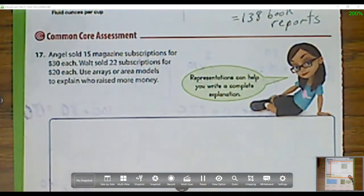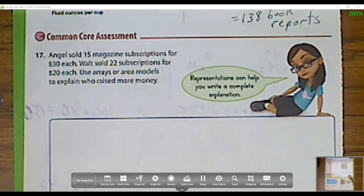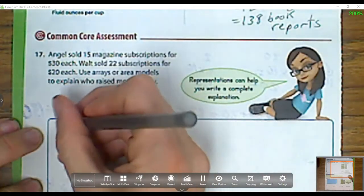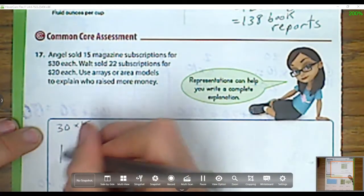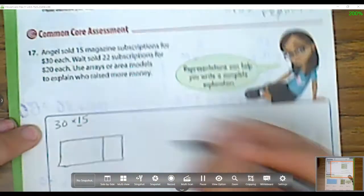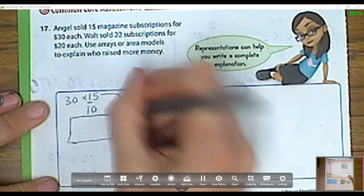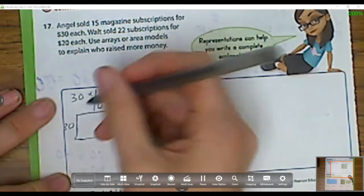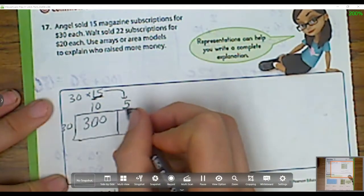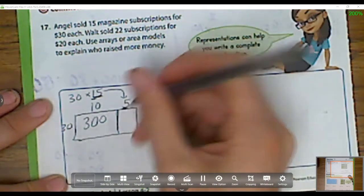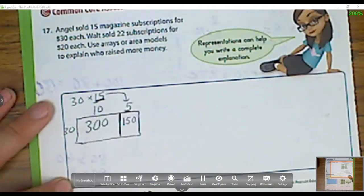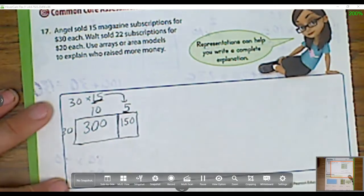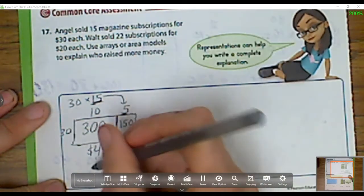Okay, let's head to number 17, our last one. Angel sold 15 magazine subscriptions for $30 each. Walt sold 22 subscriptions for $20 each. Use arrays or area models to explain who raised more money. I really like that area model, so I'm going to do 30 times 15. I'm going to break that up into my tens and my ones. Remember, 10 plus 5 equals 15, which is where this guy came, and then this side is 30. So now what do I do? I do 30 times 10 is 300. And right here I do 5, since that's how wide it is, times 30, that's how long it is. 30 times 5 is 150. So how much did he raise? Well, 300 plus 150 is $450. So this is how much Angel raised.